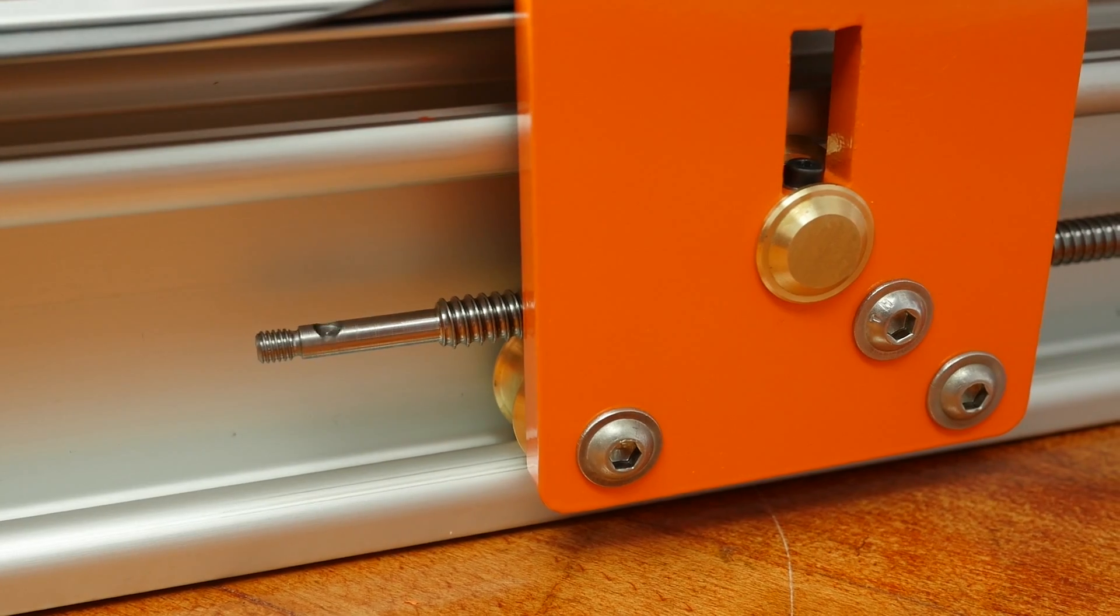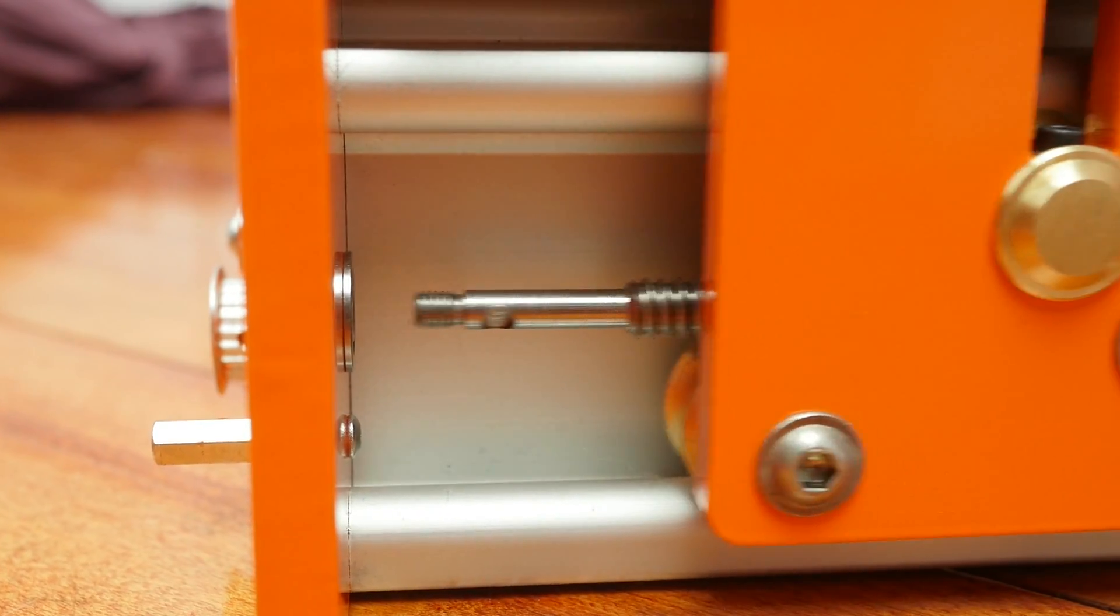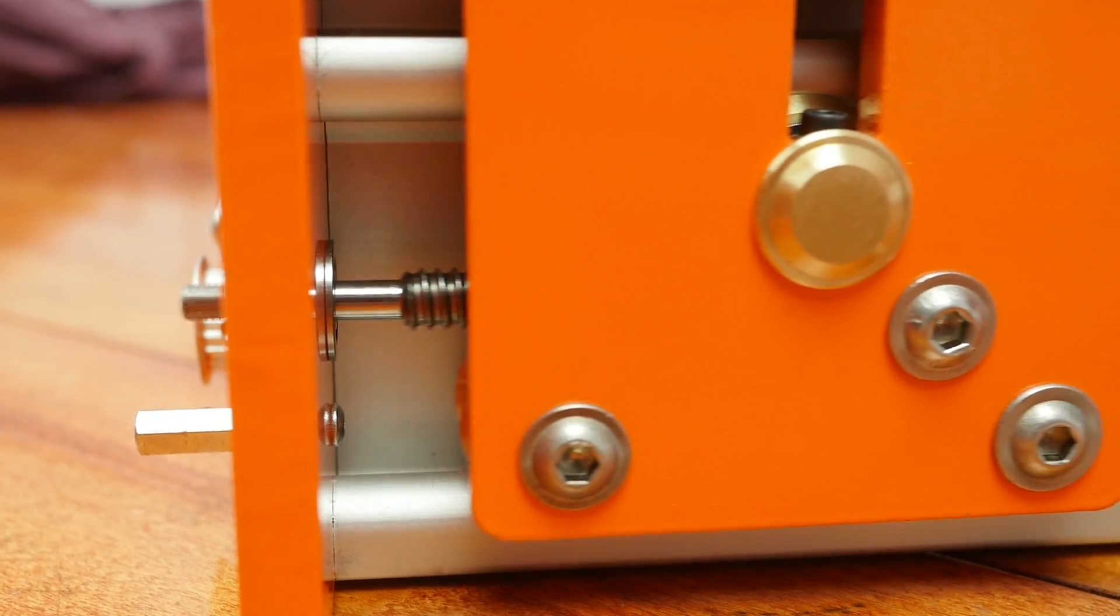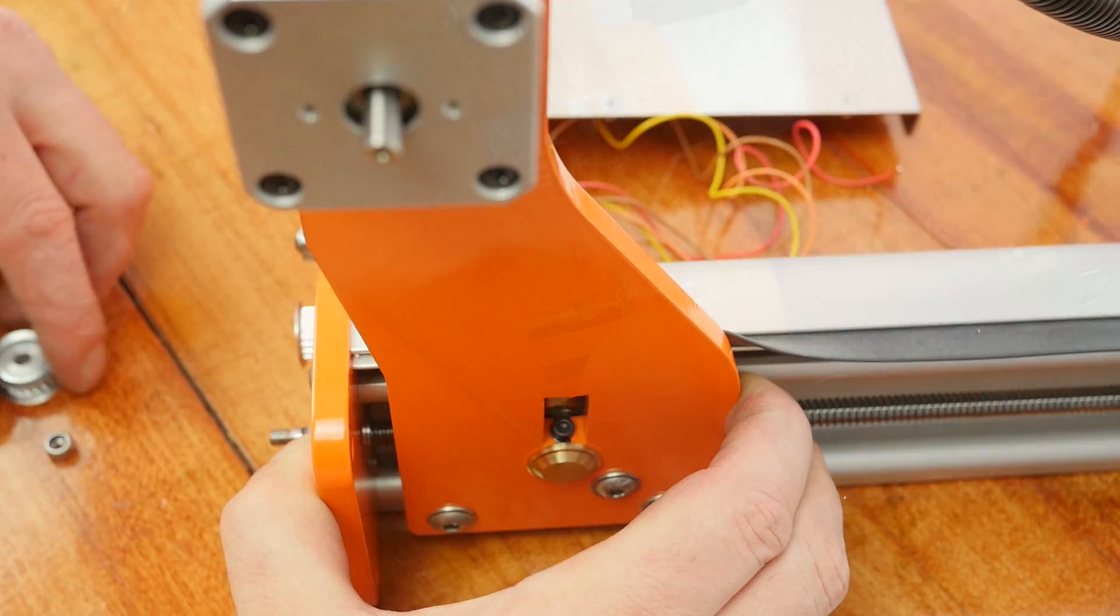Next, we'll be installing the pulleys and the belt. Back out the lead screws to approximately this position and insert the lead screw tip through the bearings. Apply force so that the lead screw is as far through the bearing as possible.